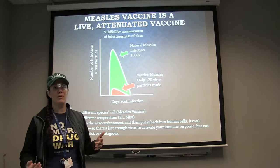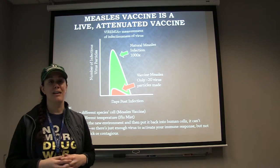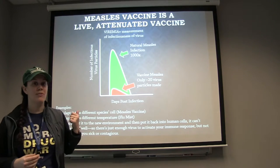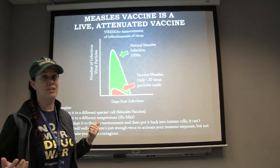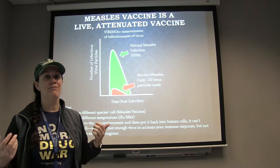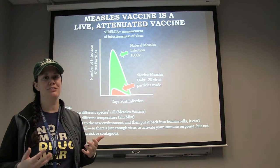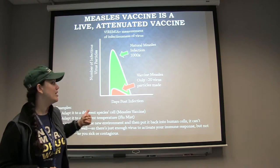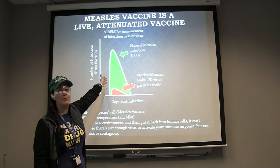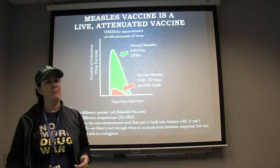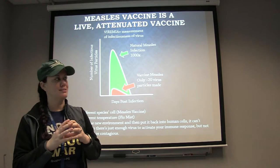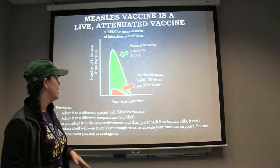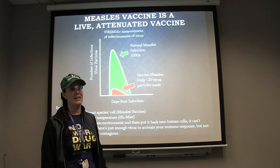Second, a little more visualization of the inability of the virus to replicate after it's been attenuated. A few virus-related terms: viremia — that's the measurement of infectiousness of a virus, basically how well the virus is able to replicate inside its host. On the graph, the Y-axis shows the number of infectious virus particles — an individual virus is also called a virion, a term you might come across in a paper. The X-axis shows days post infection.